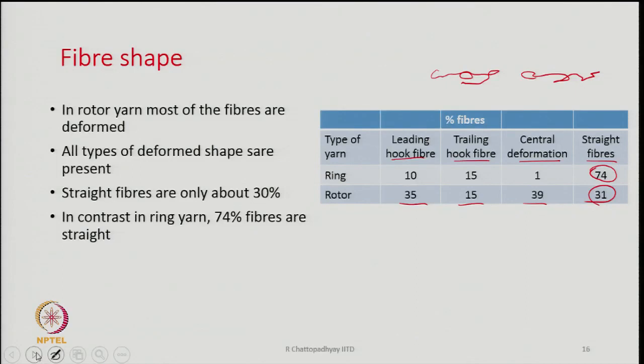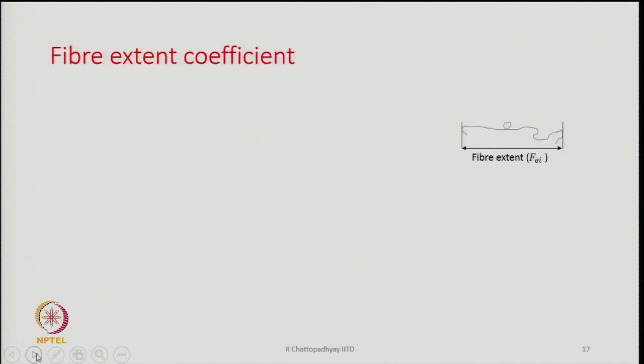Ring yarns will always be stronger than rotor yarns because most of the fibers are straight and parallel, and therefore participate fully in sharing the load when the yarn is stretched. Fibers in rotor spun yarns are mostly crumbled and deformed — they behave like short fibers. Though their actual length is more, their effective length is reduced, so they behave like short fibers and strength is less.